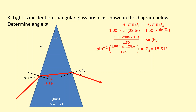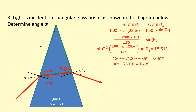To apply Snell's law at the second boundary, we need the angle of incidence there. There is a triangle formed inside the prism. Using the right angle triangle, 90 minus 18.62 gives 71.38. Then using angles in a triangle summing to 180, we do 180 minus 71.38 minus 35 degrees at the top, giving us the next angle. Then using the fact that this side is 90 degrees, we do 90 minus 73.62 to get 16.39 degrees as the angle of incidence at the second boundary.